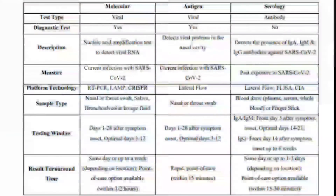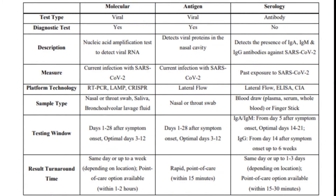Now let us see what the serology test is — more commonly called the antibody test. It is used more for understanding seroprevalence in a community and cannot be heavily relied upon in the diagnostic pathway. It basically detects the presence of IgA, IgM, or IgG antibodies against SARS-CoV-2. It typically measures past exposure to SARS-CoV-2 via IgG. The platform technology used is lateral flow, ELISA, or CLIA, and the sample is blood — plasma, serum, whole blood, or even a finger stick.